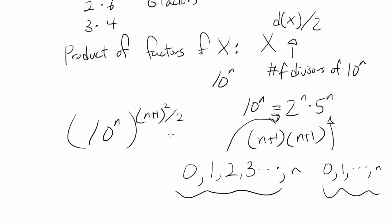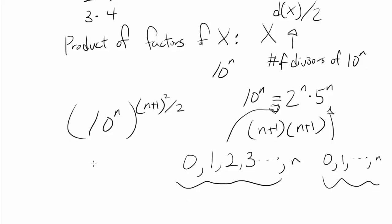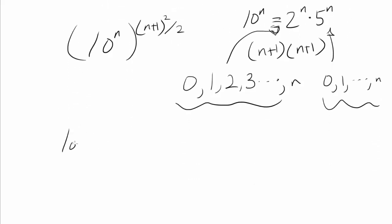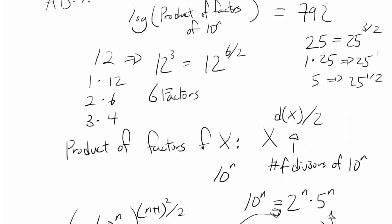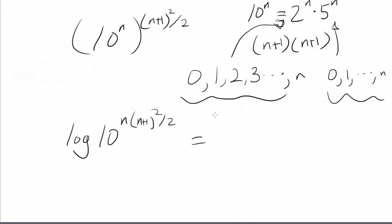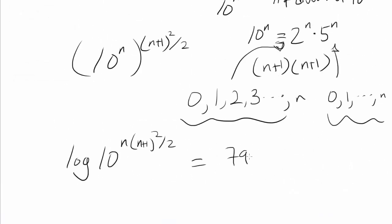And we are getting, we are taking log base 10 of this, so you're doing log base 10 of 10 to the n times n plus 1 squared over 2, and you are getting 792. And log base 10 and exponentiating something to 10 cancel out, so we have n times n plus 1 squared over 2 is 792, or n times n plus 1 squared is 1584.